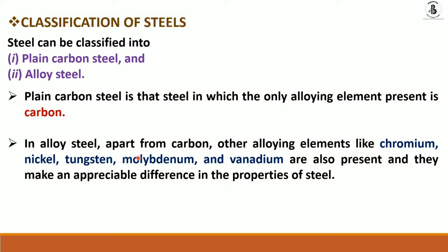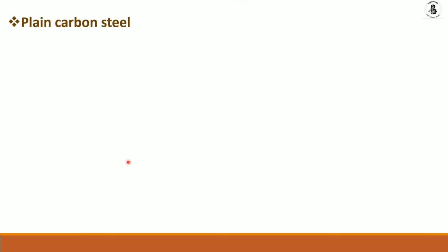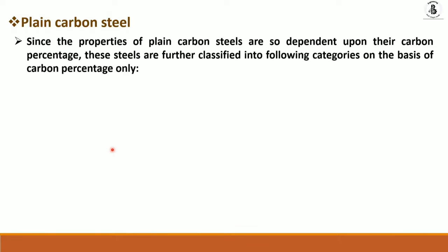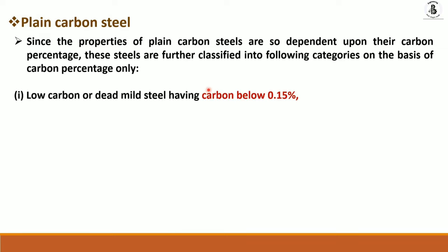Different alloying constituents like nickel, tungsten, and molybdenum give different properties to the steels depending upon requirements. The properties of plain carbon steels depend mainly on the carbon percentage, and these steels are further classified into categories with respect to the percentage of carbon.